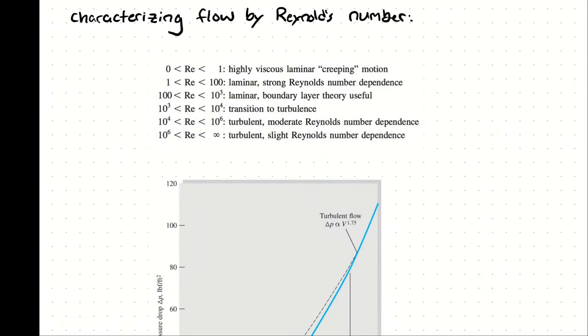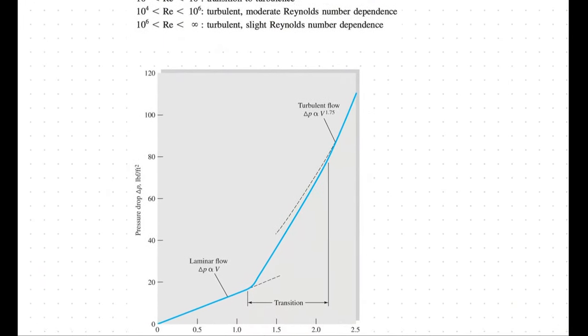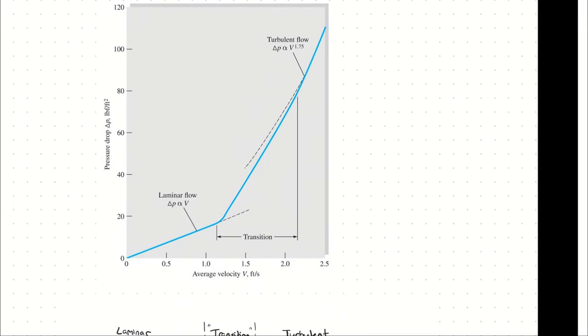When we are applying our generalizations based on empirical evidence, we do so by characterizing fluid flows into categories and generalizing that category. The two categories we are going to be using are turbulent and not turbulent, which we're calling laminar.